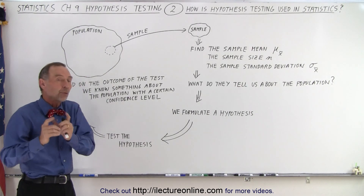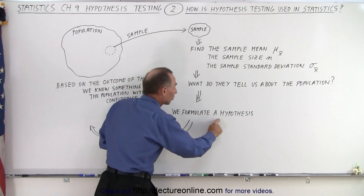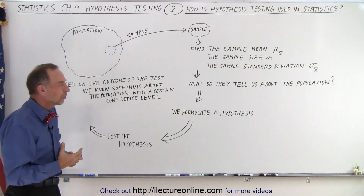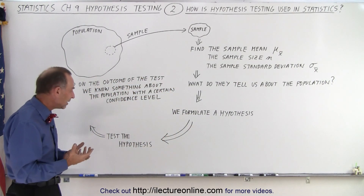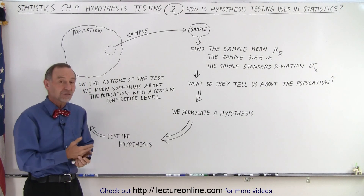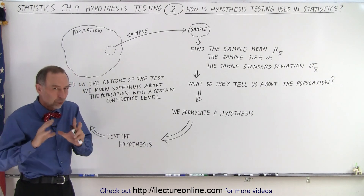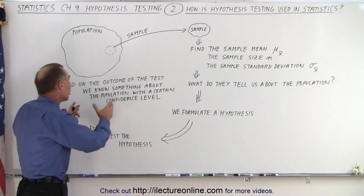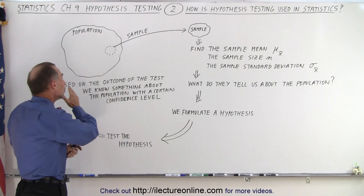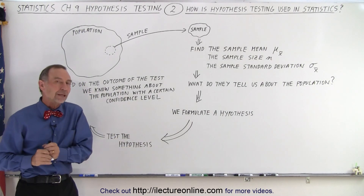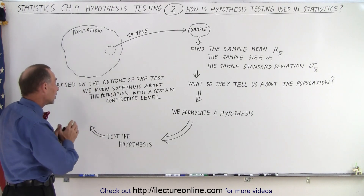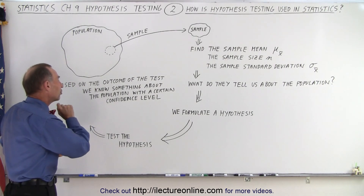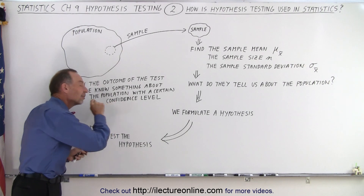So what do we do? We formulate a hypothesis based on that limited information — we draw a hypothesis. And then we need to test the hypothesis, and that's what it's all about. It's learning how to test that hypothesis, because from the result of the test we're going to know something about that population with a certain confidence level.